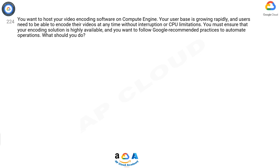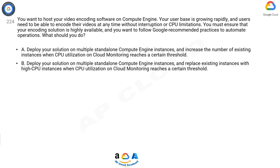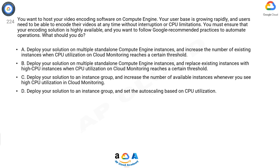A) Deploy your solution on multiple standalone Compute Engine instances and increase the number of existing instances when CPU utilization on Cloud Monitoring reaches a certain threshold. B) Deploy your solution on multiple standalone Compute Engine instances and replace existing instances with high CPU instances when CPU utilization on Cloud Monitoring reaches a certain threshold. C) Deploy your solution to an instance group and increase the number of available instances whenever you see high CPU utilization in Cloud Monitoring.